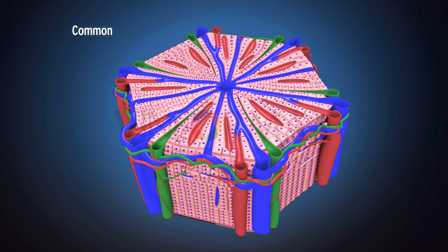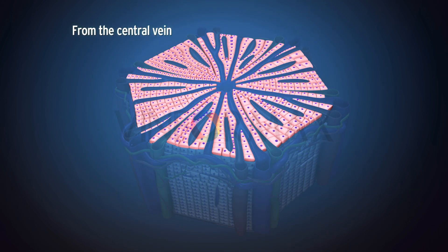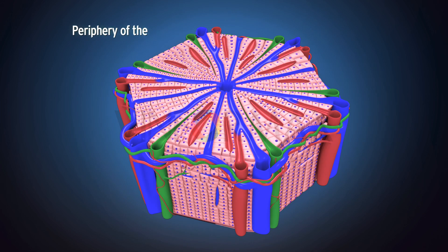These are the most common cells present in the liver. Hepatocytes are arranged in the form of anastomosing plates. The cells radiate from the central vein towards the periphery of the lobule.